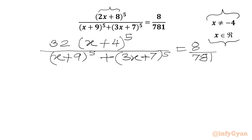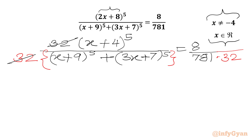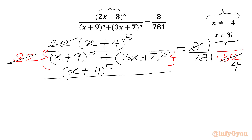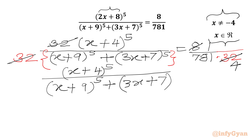Now in the LHS we have 32 in the numerator, so I will divide both sides by 32. We will multiply the denominator 781 by 32. We can cancel 32 from the LHS, and cancel 8 and 32 — so we write 4. So we can write (x+4)⁵ over (x+9)⁵ plus (3x+7)⁵ equal to 1 over 3124.